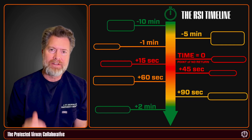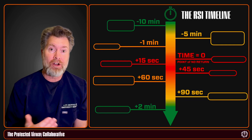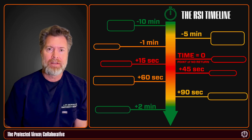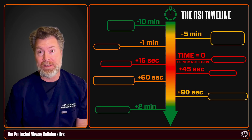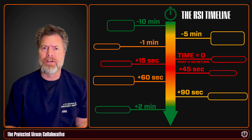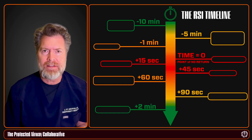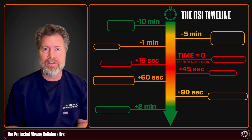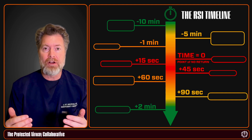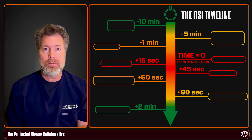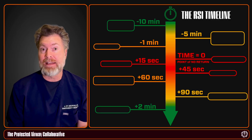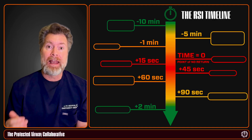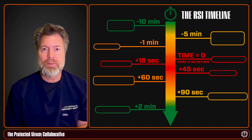Let's talk about rapid sequence intubation and what I like to call the RSI timeline. When you're in the resuscitation room and a patient has impending respiratory failure and they're about to be intubated, it may seem like there's a lot of chaos or that everything's happening all at once. It's actually not the case. There's a very distinct sequence of events that needs to happen, and if you're the person at the head of the bed you need to understand that RSI timeline and the sequence of events so you can keep your patient safe.